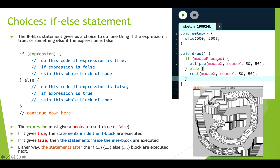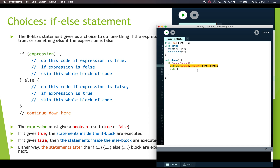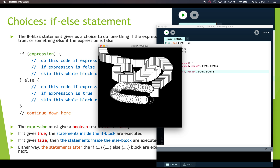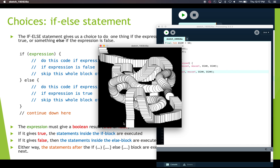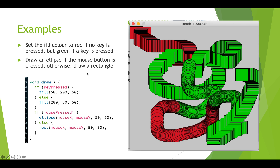Here's an example: if the mouse is pressed we draw circles, otherwise we draw rectangles. Let's go into Processing and see what that looks like. We type else, add another open and closed curly brace, and inside we change it to rect — drawing a rectangle. Now if I run this: when I'm not pressing the mouse button I'm drawing rectangles. Now I press the mouse button and drag — I'm drawing circles. I let go and now I'm drawing rectangles again, doing one thing or the other at all times.